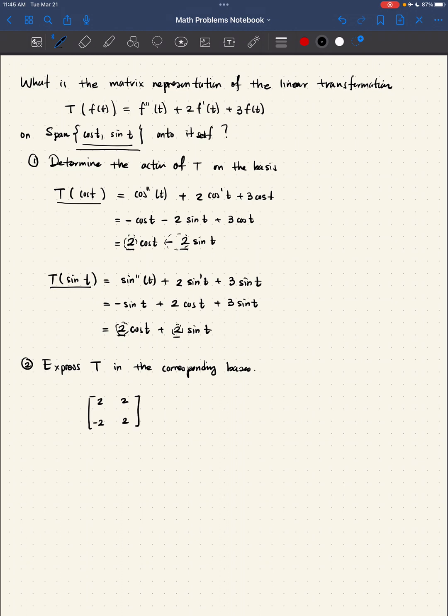Now, if you want to see how it actually behaves, we have to introduce additional notation. So here we have the following, where T of F of T is given by the following: two, negative two, two, two.